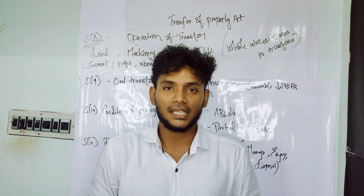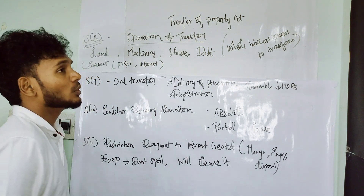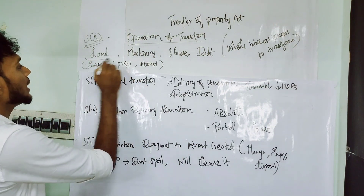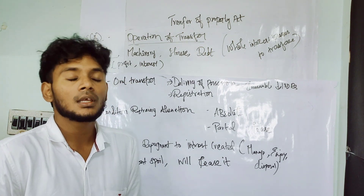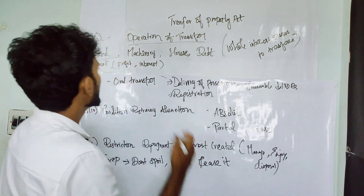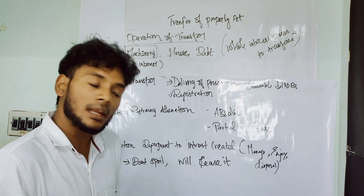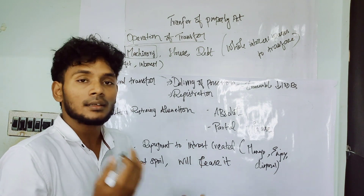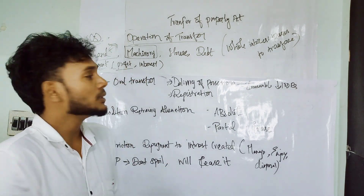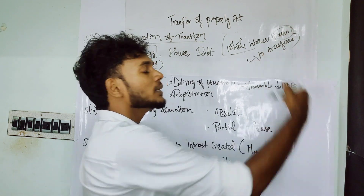Transfer of Property Act, Section 8 - operation of transfer. When a property, suppose a land, is transferred as immovable property, the ownership can transfer along with liability. The transfer also includes easement rights, lease rights, and profit interest in the land. The whole interest passes to the transferee.